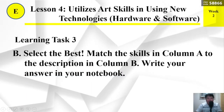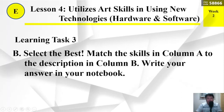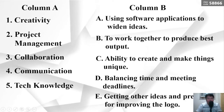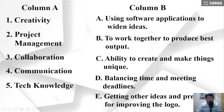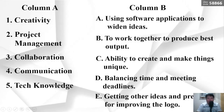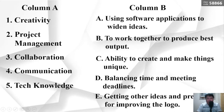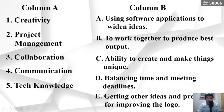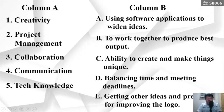Learning task number 3B: select the best match — match the skills in column A to the description in column B. Write your answer in your notebook. Column A: Number 1 — Creativity, Number 2 — Project management, Number 3 — Collaboration, Number 4 — Communication, Number 5 — Tech knowledge. Column B: A — using software applications to widen ideas; B — to work together to produce best output; C — ability to create and make things unique; D — balancing time and meeting deadlines; E — getting other ideas and preferences for improving the logo.